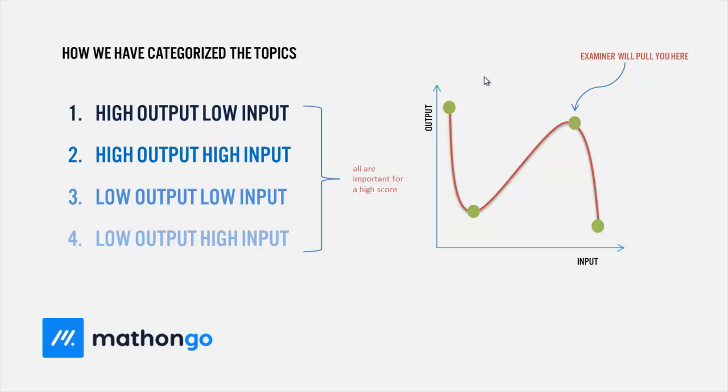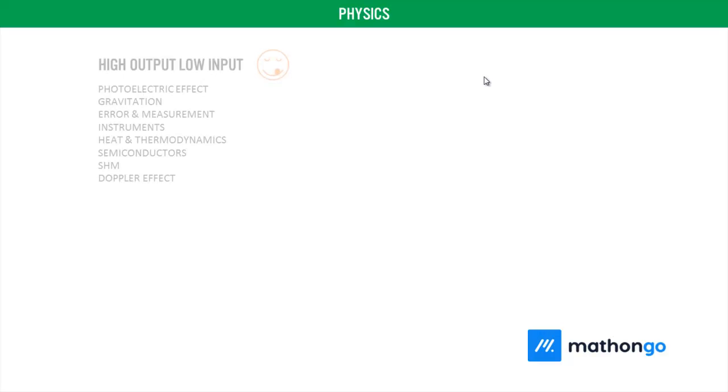Coming to the chapter-wise analysis, I will tell you the chapters which should be done in this particular order. First, obviously, high output low input - the fun category. For physics: photoelectric effect, gravitation, error and measurement, instruments, heat and thermodynamics, semiconductors, SHM, and Doppler effect are the topics you should actually do.